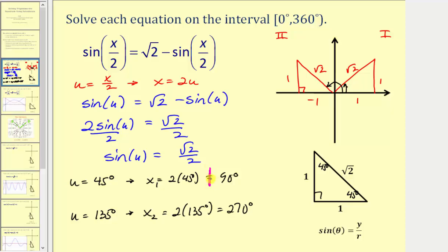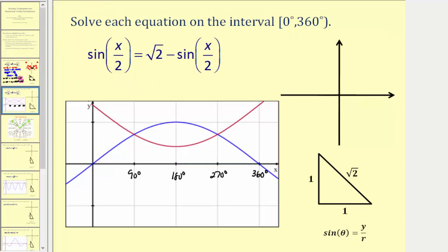To check our solutions graphically, we graph y equals sine of x divided by two (the left side) and y equals square root two minus sine of x divided by two (the right side), and verify the two functions intersect at these two x values. The two functions do intersect at 90 degrees as well as 270 degrees, verifying our two solutions are correct.